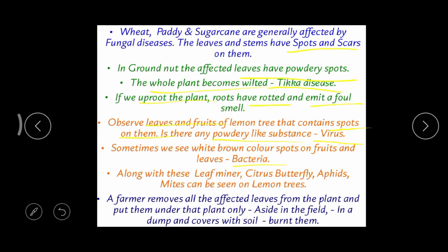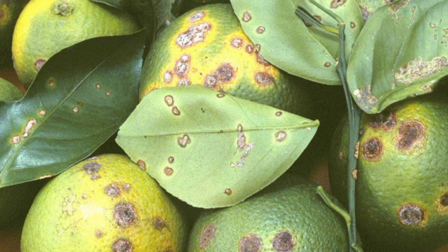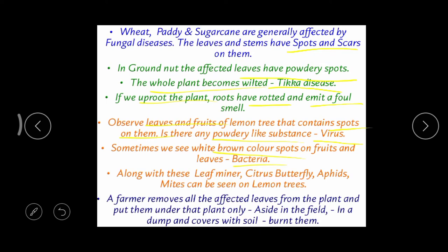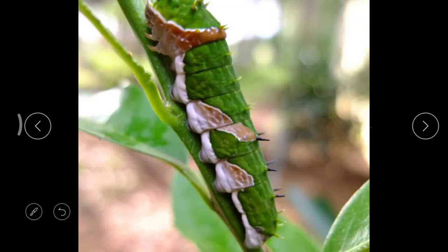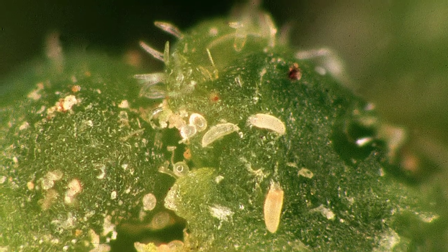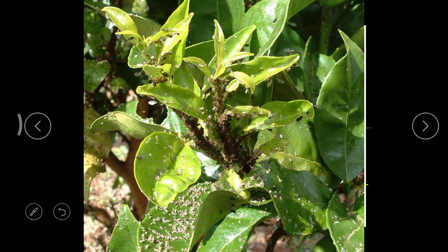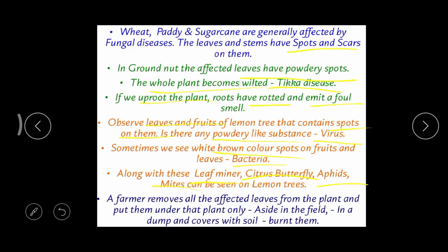If powdery white spots are present over the leaves or fruits of citrus, that indicates a viral infection. Brown colored spots on the fruits and leaves indicate bacterial infection — you may have seen these brown spots on lemons in the market. Along with viral and bacterial infections, citrus crops are also damaged by the leaf miner, citrus butterfly, mites, and other pest insects.